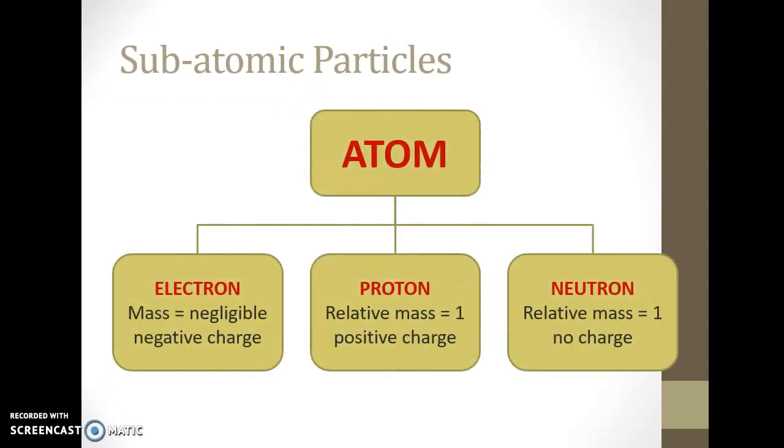We have three subatomic particles: electron, proton, and neutron. Electron is the lightest whereby the mass is negligible. But proton and neutron both has relative mass 1. Electron is negatively charged. Proton is positively charged. But neutron has no charge at all.